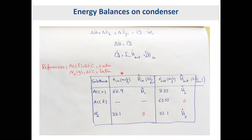In the inlet stream we have acetone in vapor and nitrogen in vapor. In the outlet we have acetone in vapor, acetone in liquid, and nitrogen in vapor. The acetone liquid at 20°C and 5 atm is our reference point, so its enthalpy is zero. We need to calculate H1 (acetone vapor, 65°C, 1 atm), H2 (acetone vapor, 20°C, 5 atm), and H3 (nitrogen, 20°C, 5 atm) relative to their respective reference points.